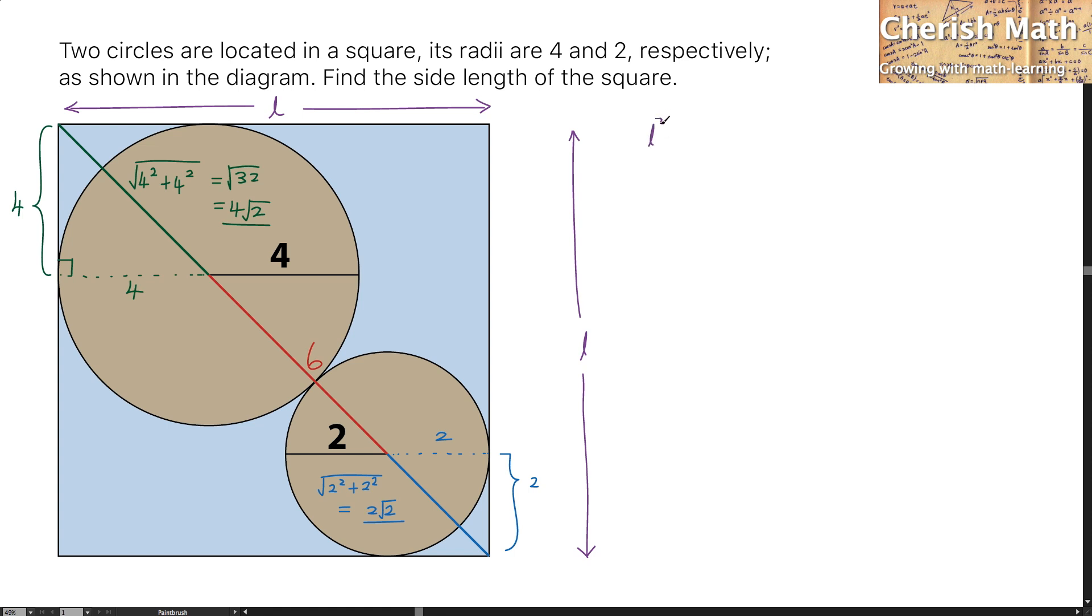L squared plus L squared equals the square of the entire length of this diagonal. That would be 4 times the square root of 2 plus 6 plus 2 times the square root of 2, squared.